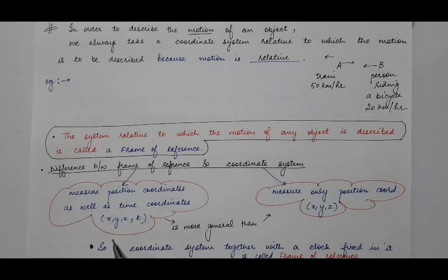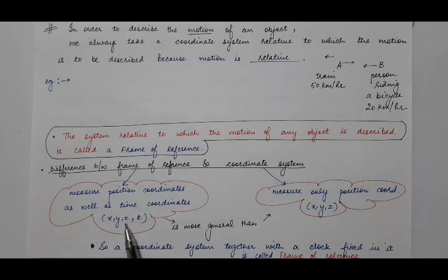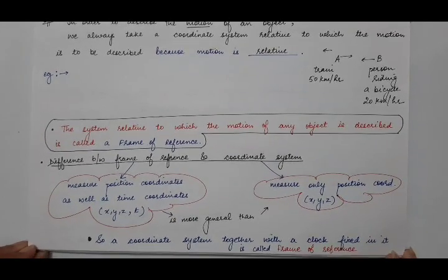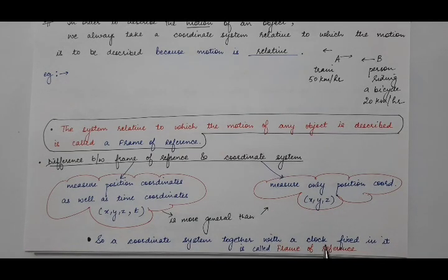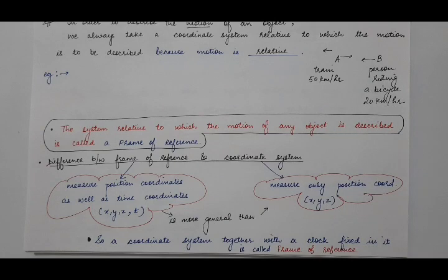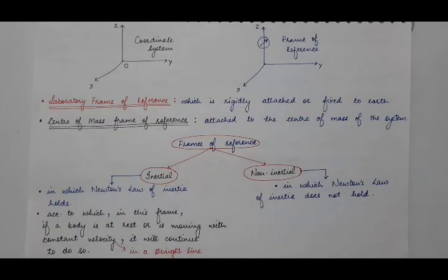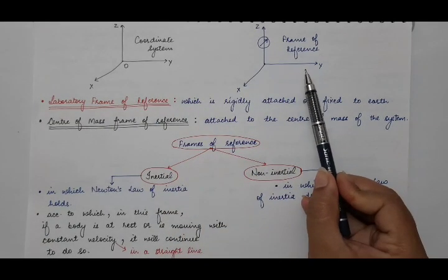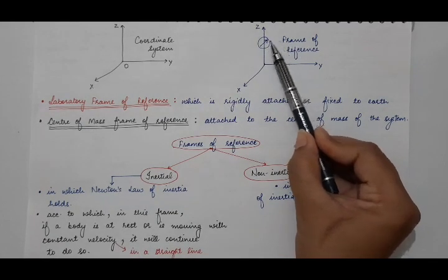A frame of reference tells us about position coordinates x, y, z, so it is a coordinate system, but it also has a clock which tells us the time coordinate. So a frame of reference is actually a coordinate system together with a clock fixed in it. Here you can see the representation of a coordinate system, and this is the representation of a frame of reference, where this clock tells us the time.